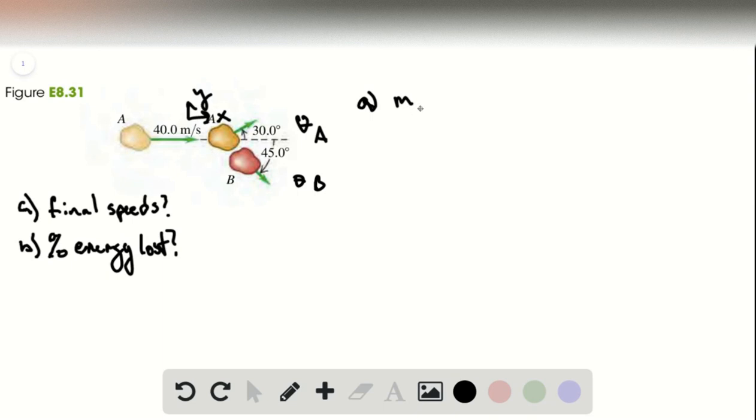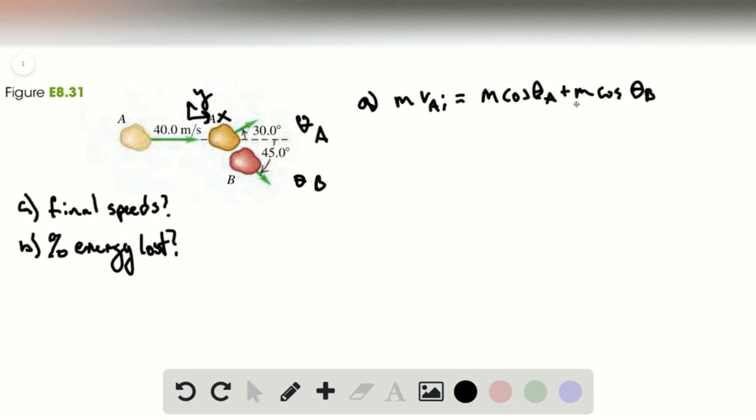So M, which has no subscript because they both have the same mass, times VA initial equals—and now we're doing the x component, so we're going to want the cosines of these angles—M VA final cosine of theta A plus M VB final cosine of theta B. We'll note that all the M's cancel out here.